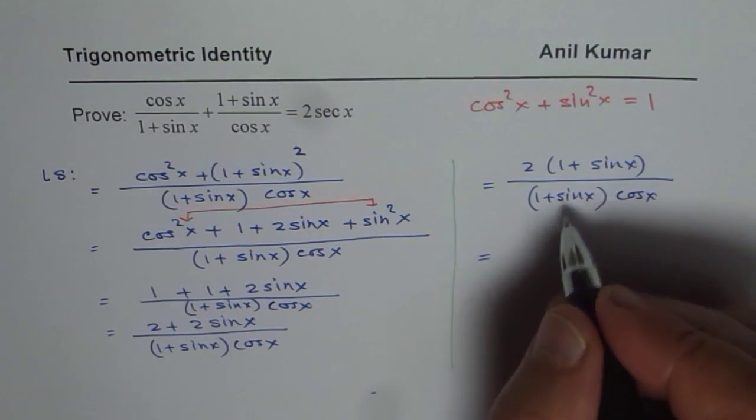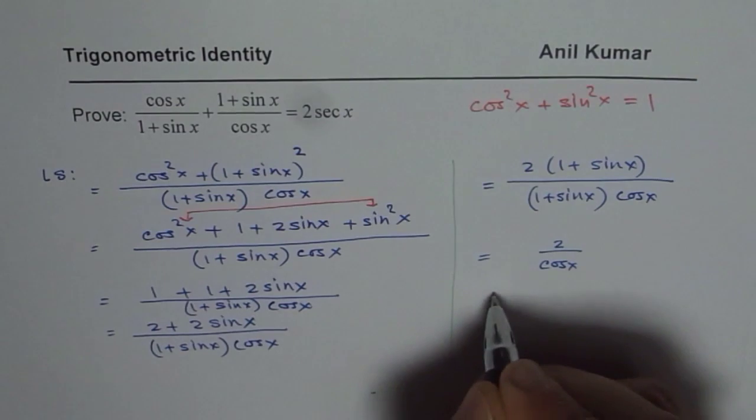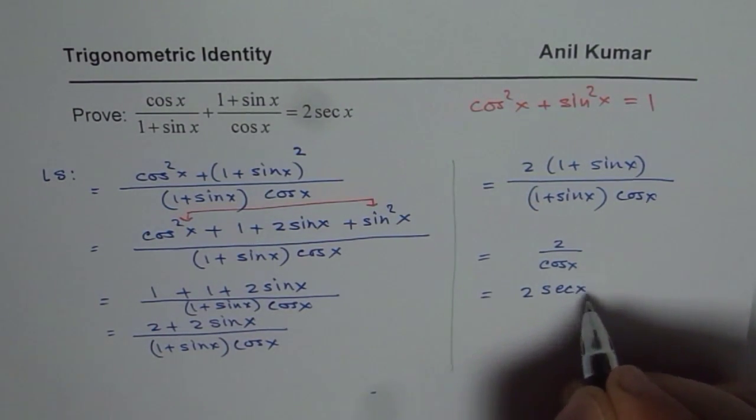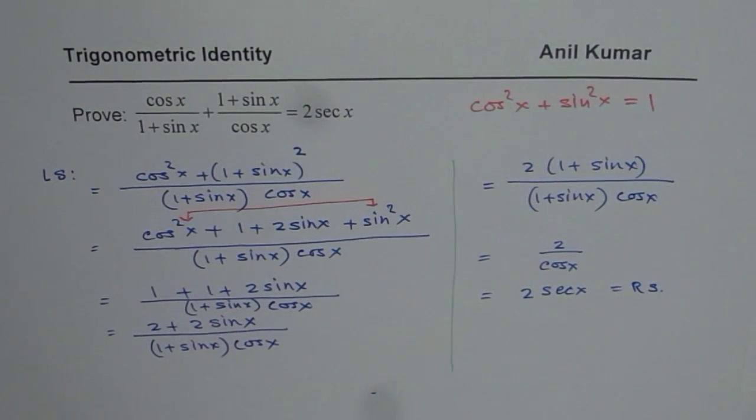Now you can cancel 1 plus sin x and 1 plus sin x. You get 2 over cos x which equals 2 sec x, and that is the right side. That is how we can prove the given identity.